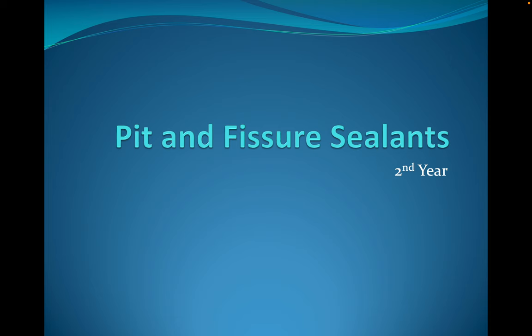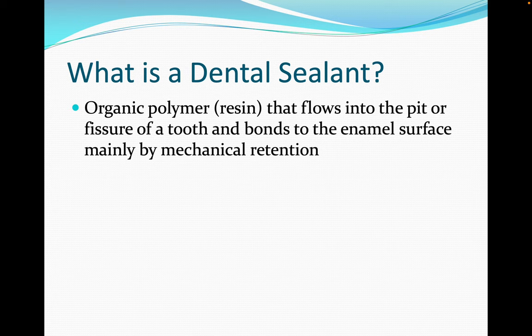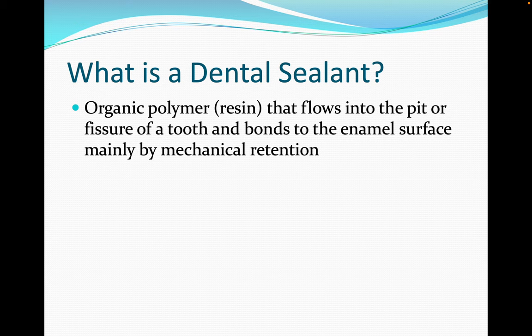This lecture is on pit and fissure sealants. A dental sealant is an organic polymer or resin that flows into the pits and fissures of a tooth and bonds to the enamel surface mainly by mechanical retention. Sealants are placed only on the enamel, not on dentin surfaces. Sealant material is a step below flowable composite — it has even less filler and more matrix, making it more flowable but less strong than flowable composite.